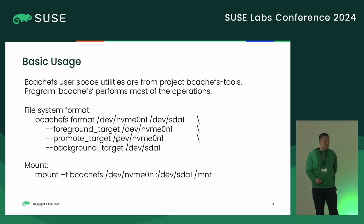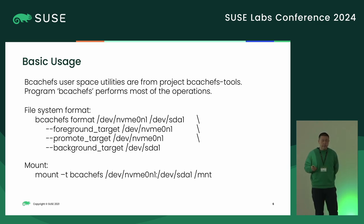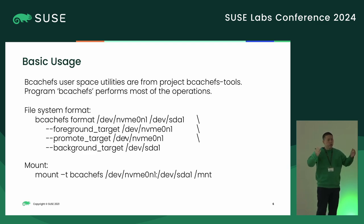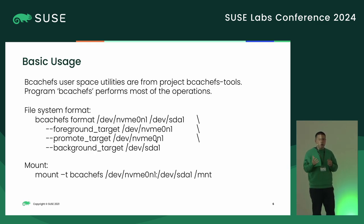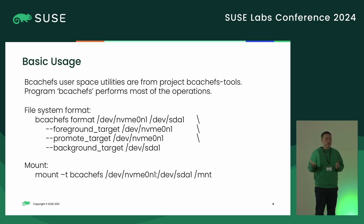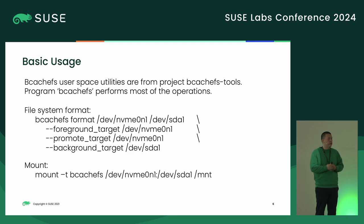One is the foreground target — this is how BcacheFS can target a device. The foreground target means all IOs should go into the foreground target first. The second is the promote target, also the SSD. The promote target means if a read on the foreground target misses, the data should be promoted to the promote target — similar to a read cache.